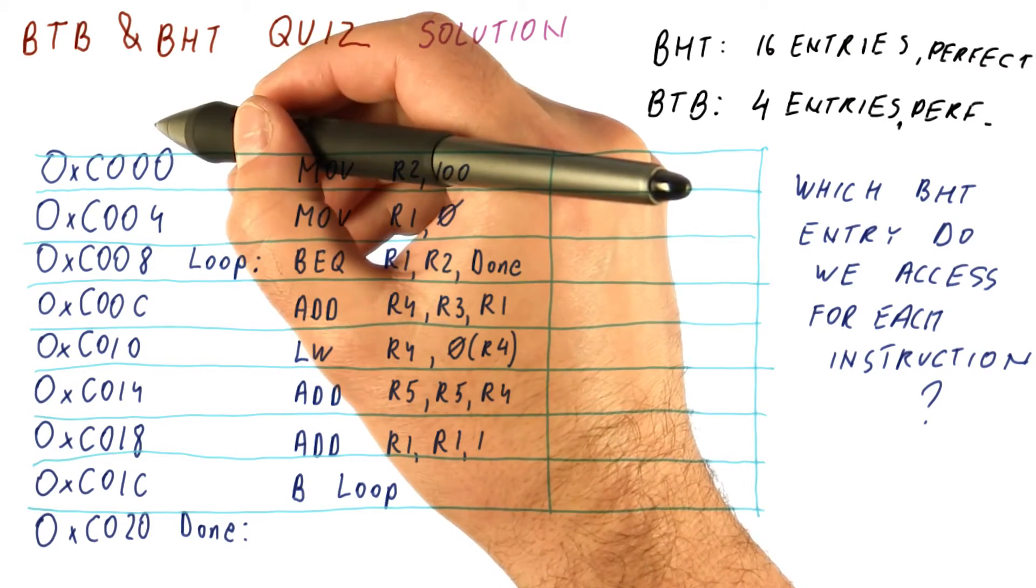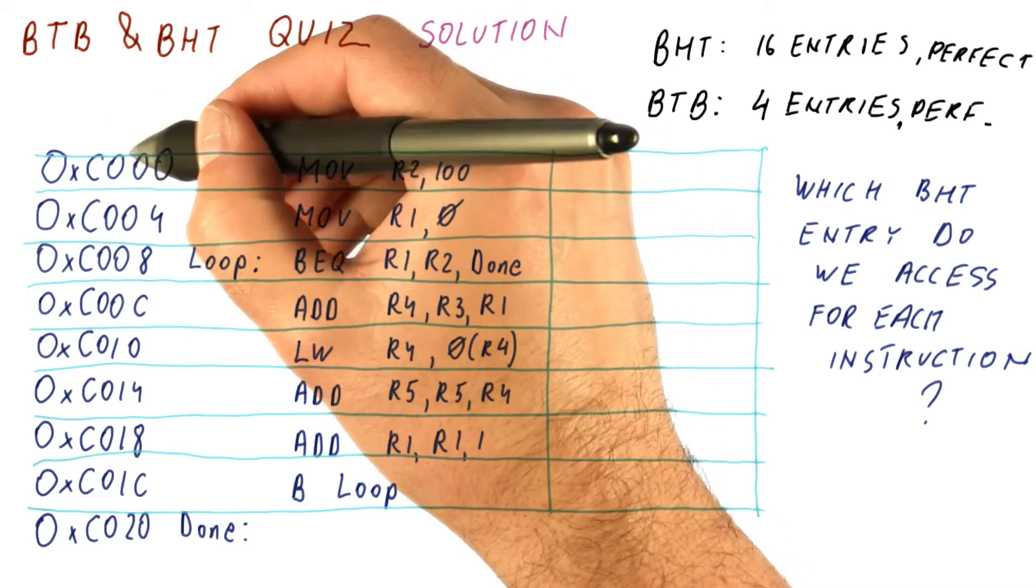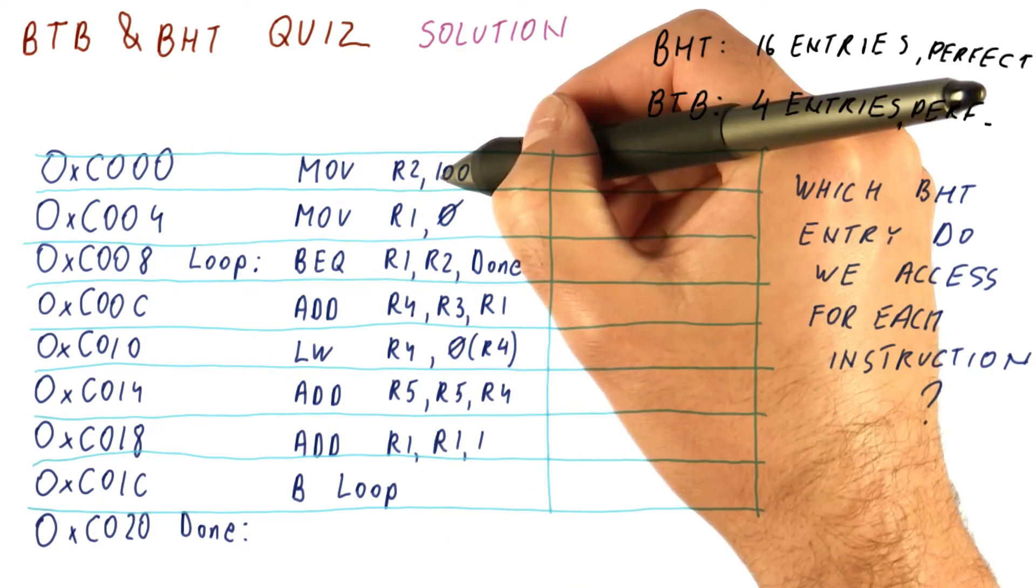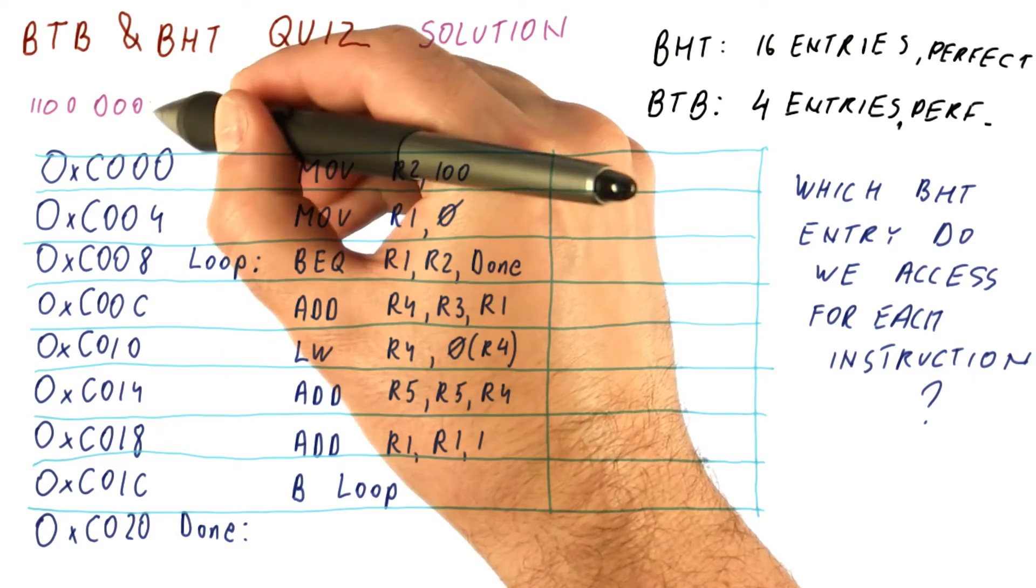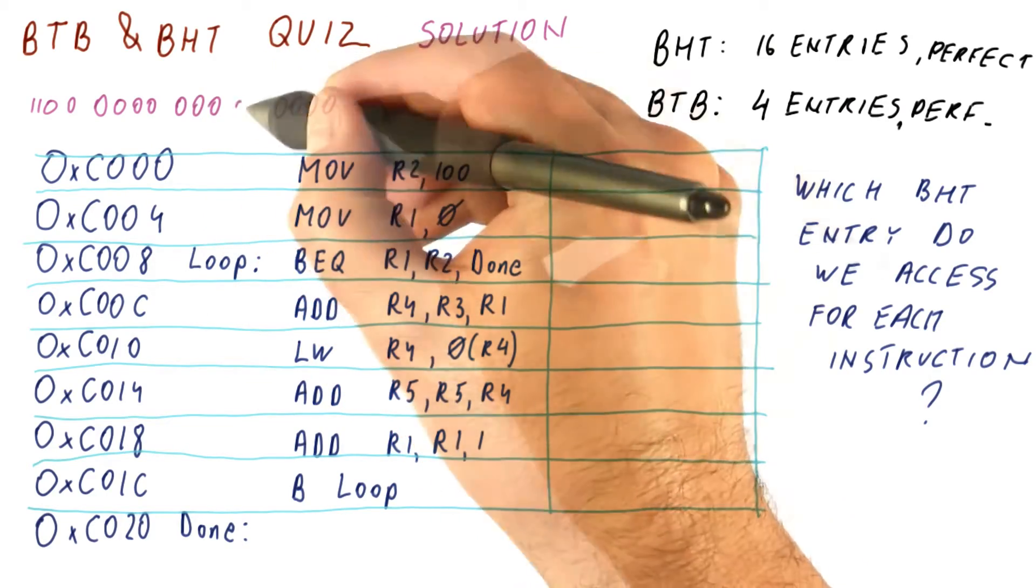In this case, our instruction address has the following bits. For the move instruction here, we have C, zero, zero, zero.